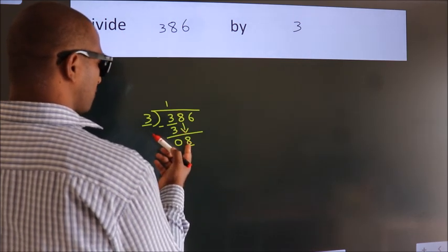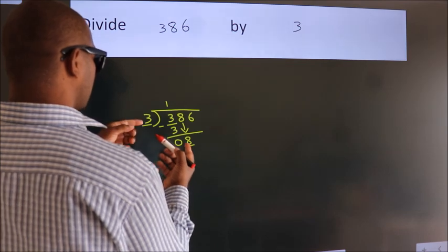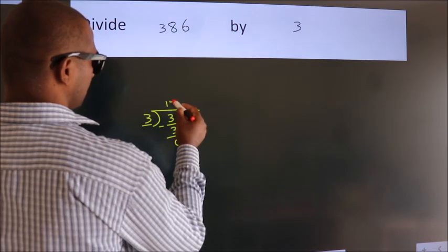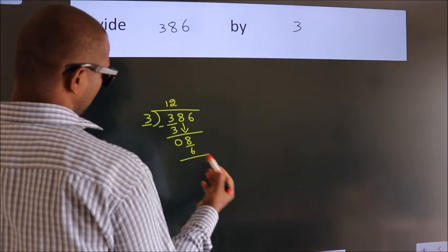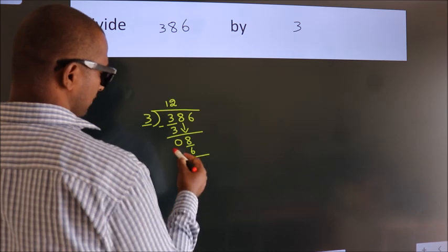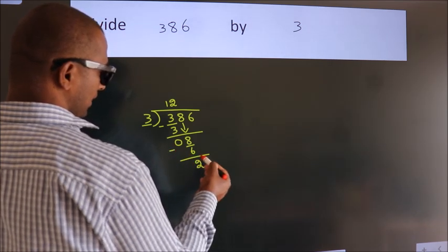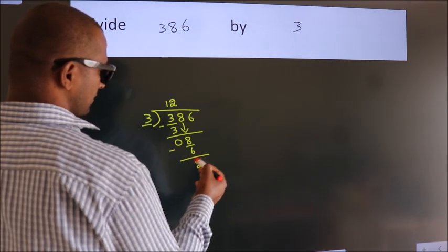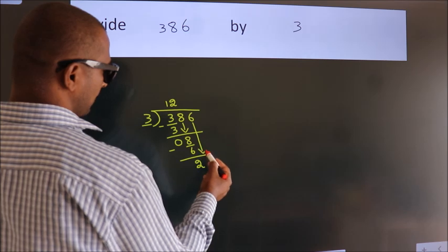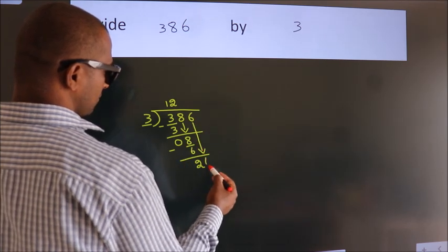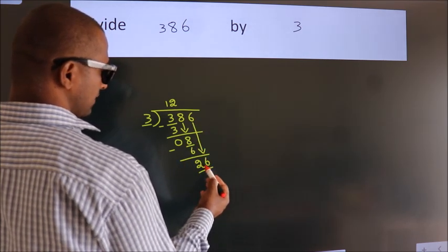A number close to 8 in the 3 table is 3 2's, 6. Now we subtract, we get 2. After this, bring down the beside number, so 6 down, so 26.